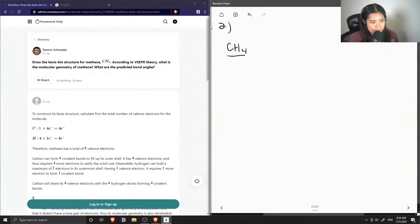First, we need to write the Lewis structure for methane. To do that, we need to find the total number of valence electrons for this molecule.